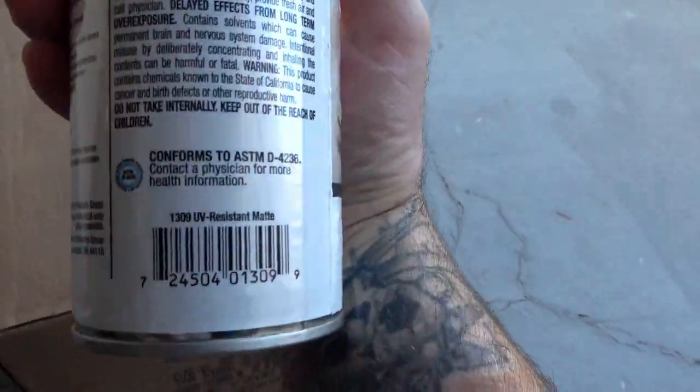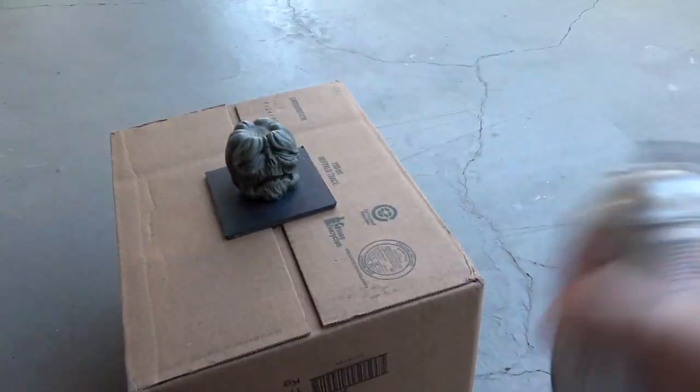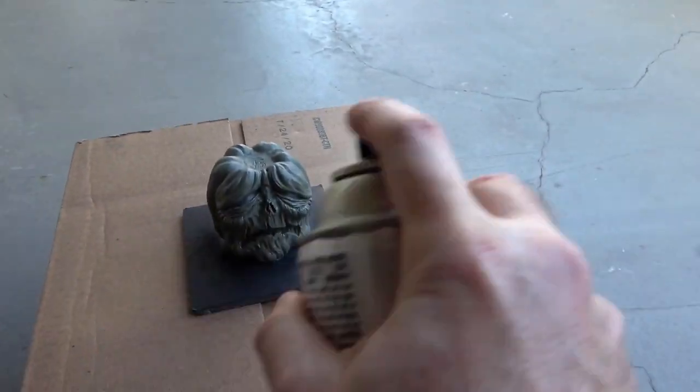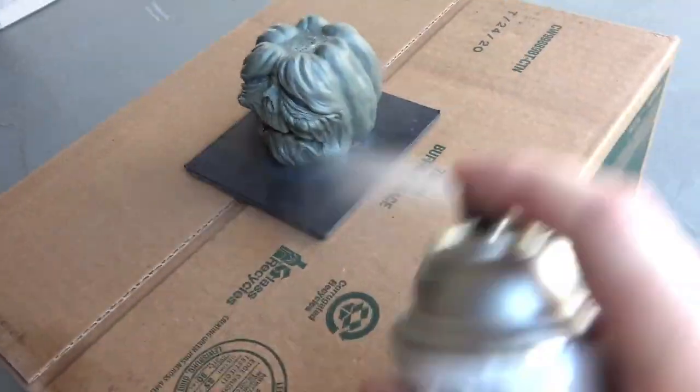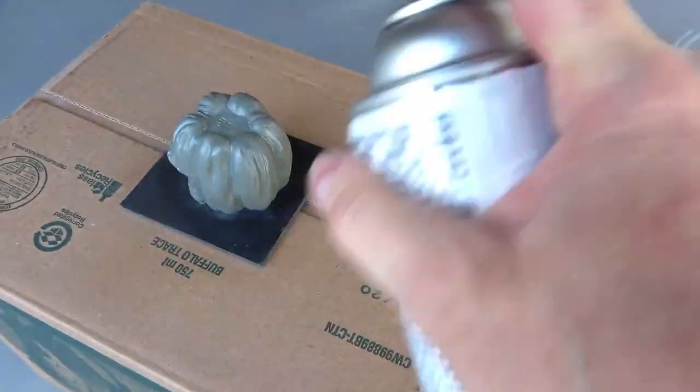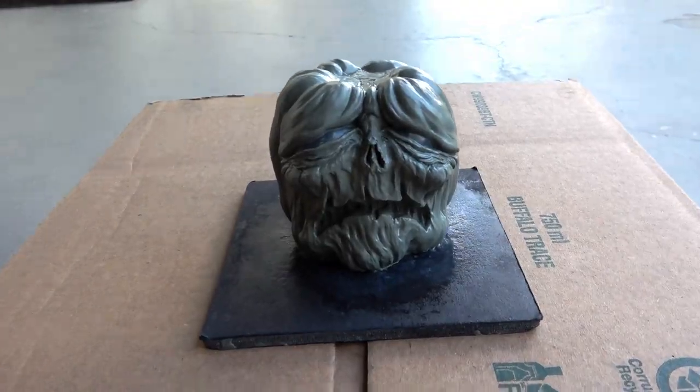Now that the baby imp sculptures were done, it was time to make some silicone box molds of them. First, I seal the sculptures with three light coats of Krylon crystal clear or matte spray, letting them dry in between coats.